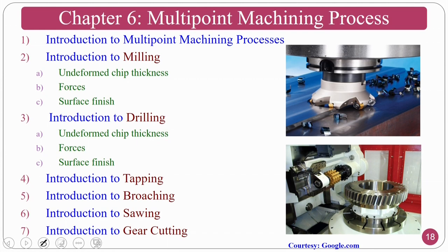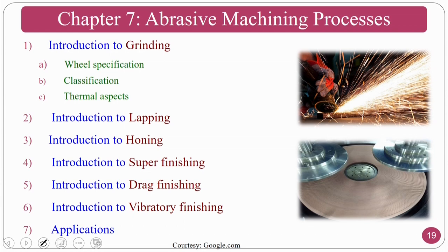Chapter 6 deals with multipoint machining processes, also called practical machining processes. We start with an introduction to milling — undeformed chip thickness, forces, and how better surface finish is achieved. Then we cover drilling — mechanics, forces, surface finish, and undeformed chip thickness. We also study tapping — how to make internal and external threads. Broaching is covered for high aspect ratio applications, sawing for parting operations, and gear cutting operations.